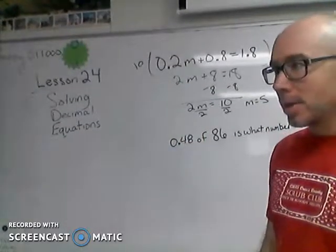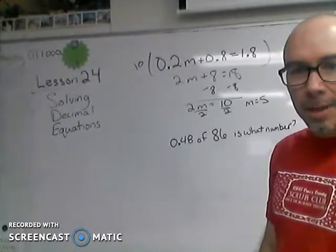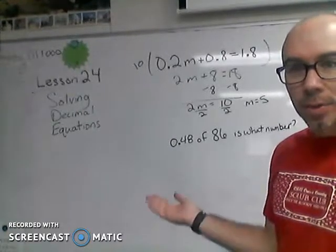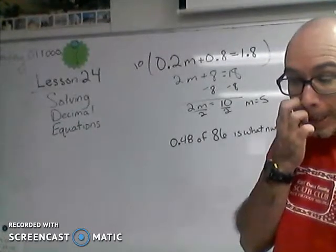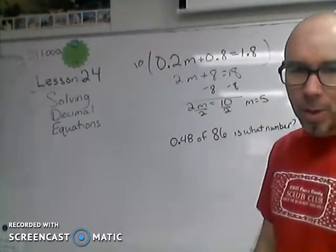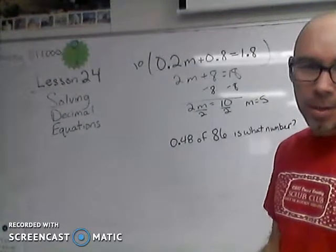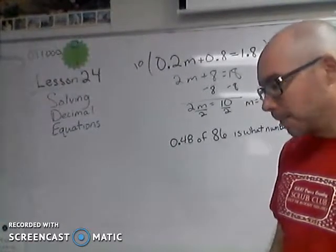I could do the division by 0.2 in my head because that's 2 tenths or 1 fifth, and 1 divided by 1 fifth is 5. But I can't picture it very well in my head. I can picture 10 divided by 2 pretty easily in my head.